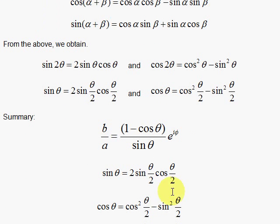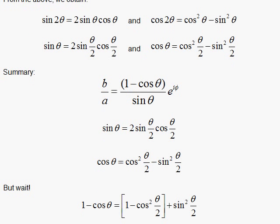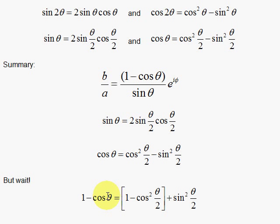If you let theta go to theta over 2, you can get these half angle forms, which are nice to have in our bag of tricks. The ratio b over a simplifies using these. The bonus is that one minus cosine theta equals two sine squared of theta over 2. So we replace the numerator with two sine squared theta over 2.